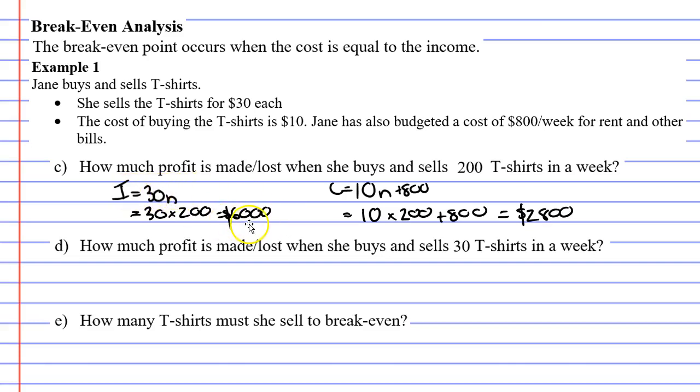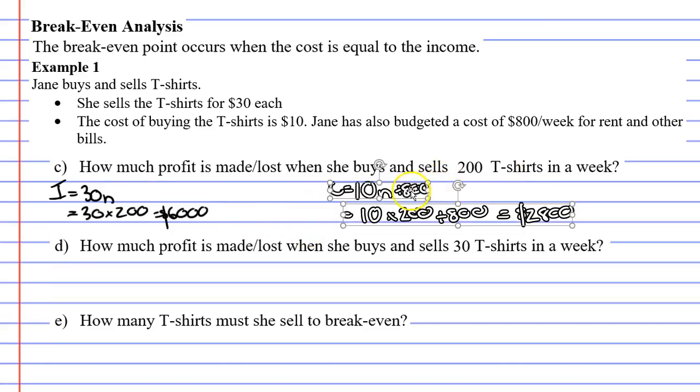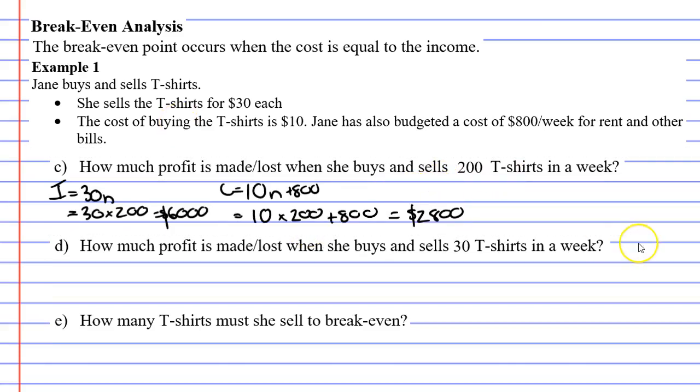So we've got an income of $6,000 and a cost of $2,800. They're asking us how much profit we're going to make. And in order to find profit, we need to subtract the cost from the income. So we're going to go $6,000 minus the cost of $2,800. That comes out to a profit of $3,200. Profit is kind of like money in the pocket.